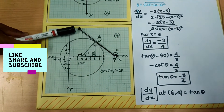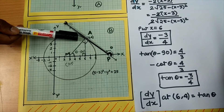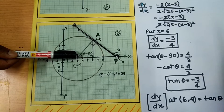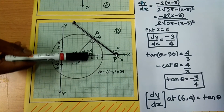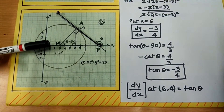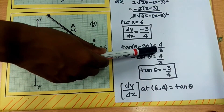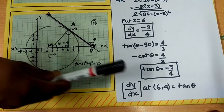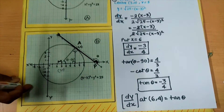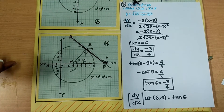The inclination of the line on the x-axis is θ. This angle will be 90°, so by the exterior angle property, angle AMx equals θ − 90°. We draw a perpendicular from A to the x-axis. For θ − 90°, the perpendicular is 4 and the base is 3. So tan(θ − 90°) = 4/3, which simplifies to tan θ = −3/4. Both results are equal — the first came from the derivative and the second from the inclination.